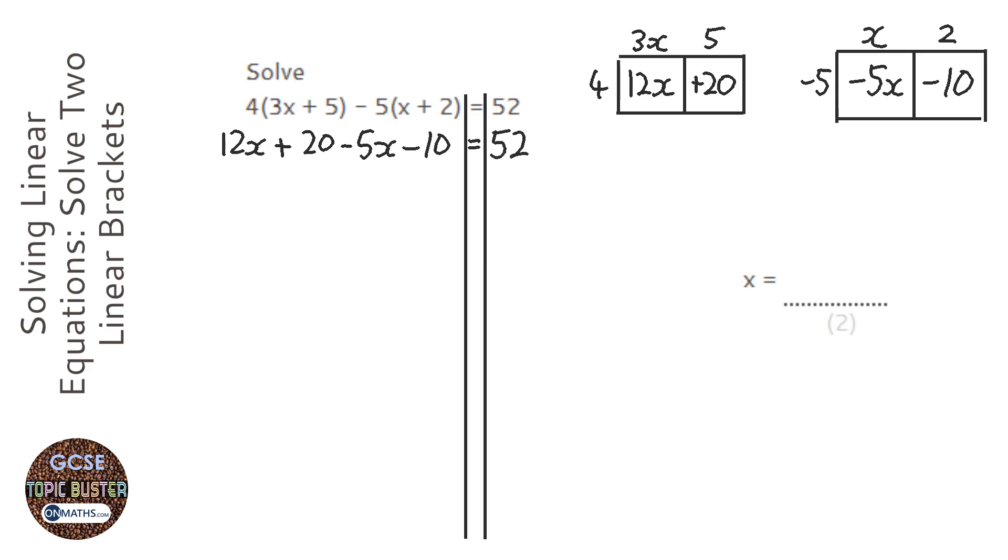copy out equals 52. Okay, collect like terms. So 12x take away 5x is going to be 7x, and 20 take away 10 is going to be plus 10. Okay, this time I can do something to the